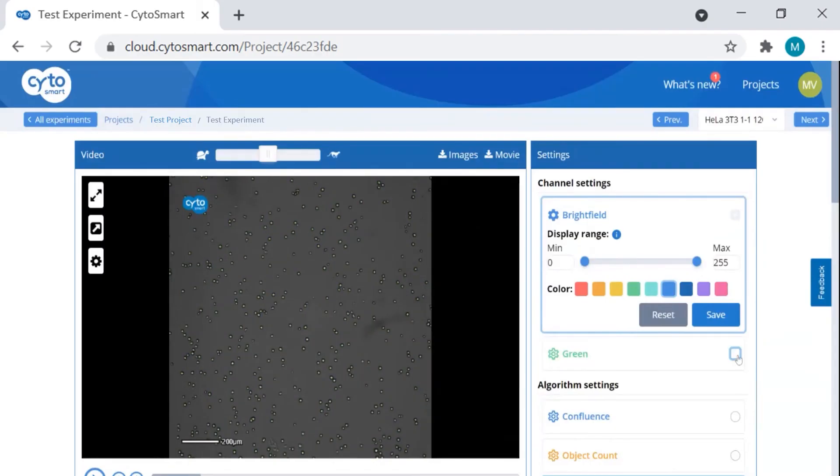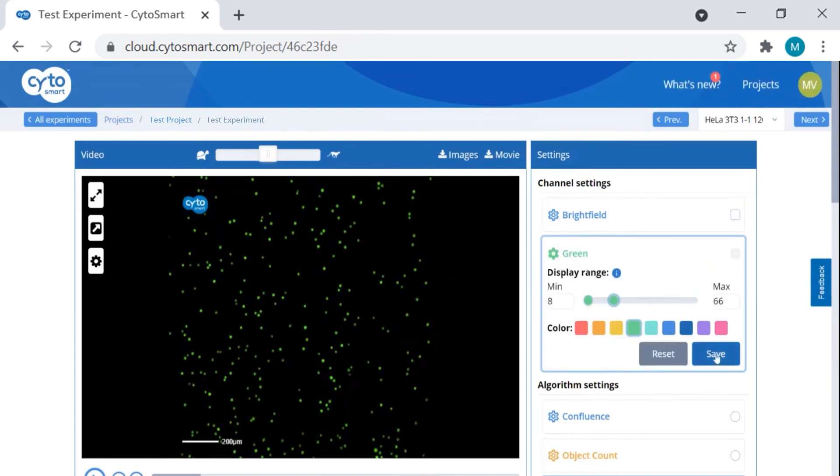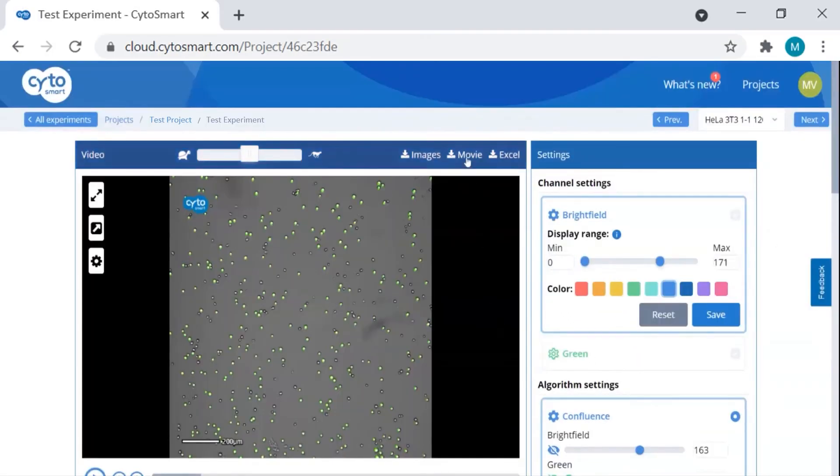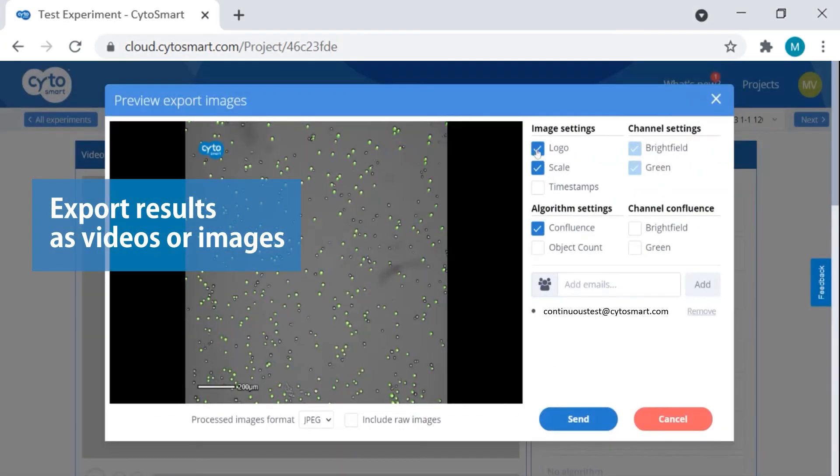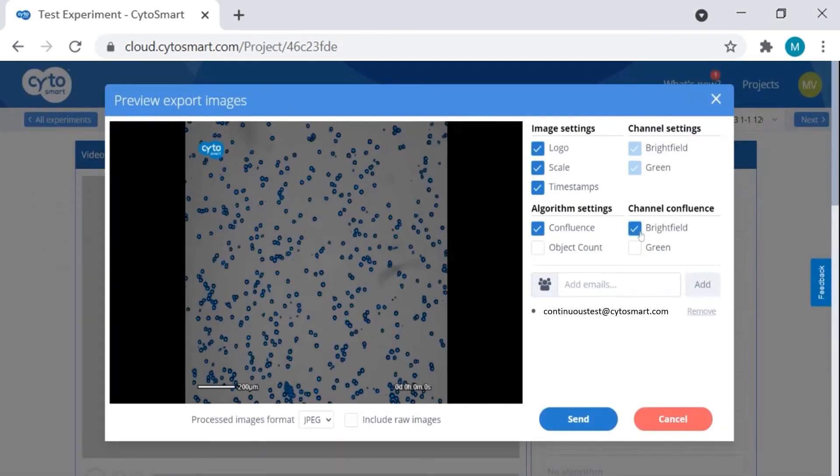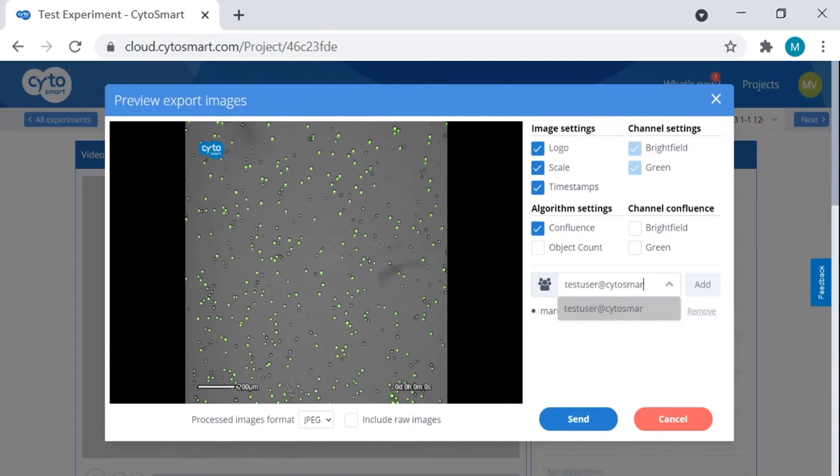After ending your experiment, you can process the images and analysis in the cloud to customize your results. When you're satisfied with your experiment, you can export them as videos or images, which you can adjust to your requirements. Share great results directly with your colleagues.